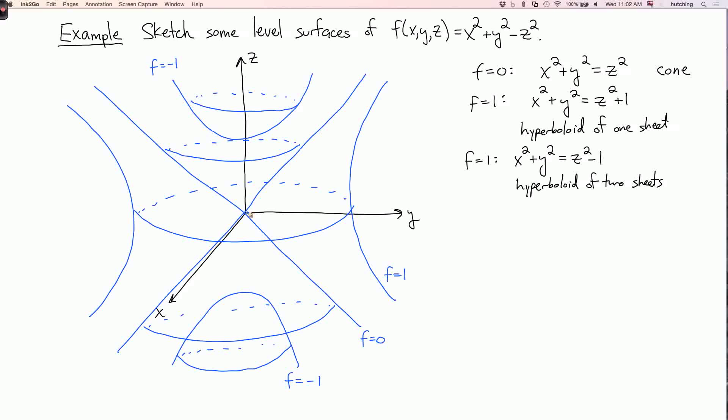And then as f goes past zero and becomes negative, it splits into these two separate sheets. So you can try imagining the movie in which the hyperboloid of one sheet pinches into a cone and splits into two sheets.